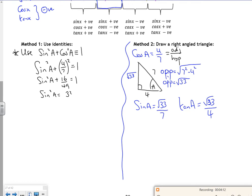If I take that over, sine squared A is 33 over 49. If I square root it, it's the square root of 33 over the square root of 49, which is 7. I've got a plus or minus here for the square root.